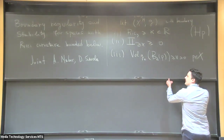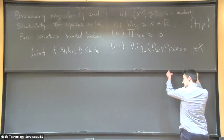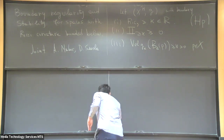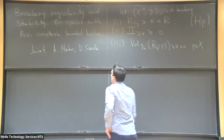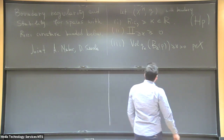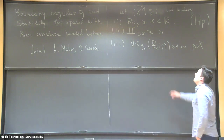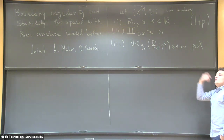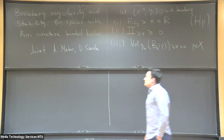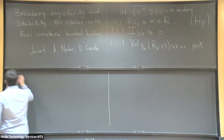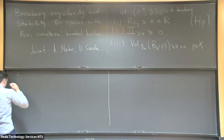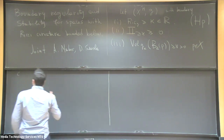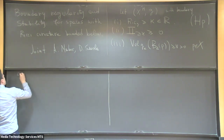A variant of the famous Gromov compactness theorem ensures that any sequence of spaces satisfying the first two conditions admits a converging subsequence. This is the precise statement: it admits a converging subsequence in the Gromov-Hausdorff topology.